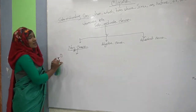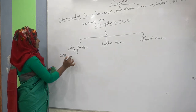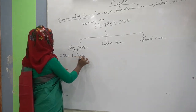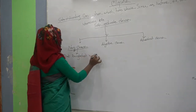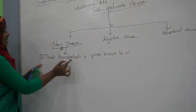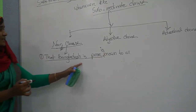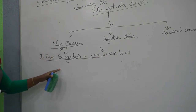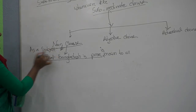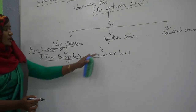Noun Clause can be used as a subject in a complex sentence. For example: 'That Bangladesh is poor is known to all.' Here, 'that Bangladesh is poor' is the Noun Clause used as the subject of the sentence.